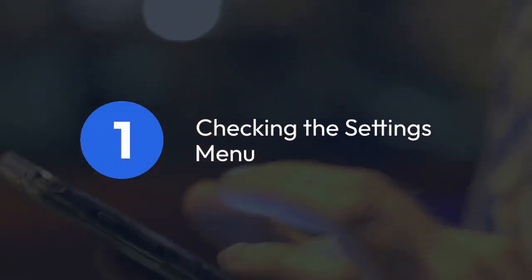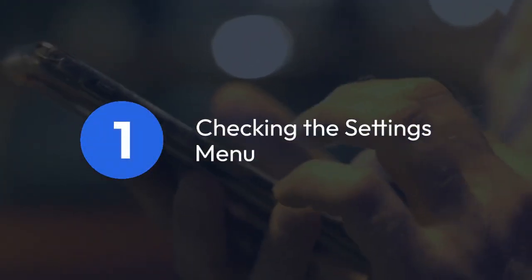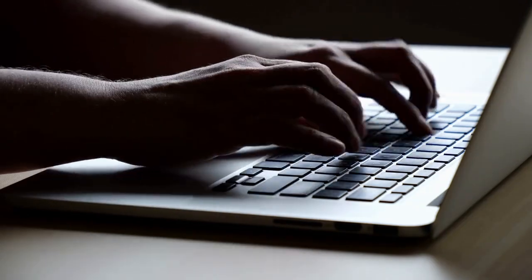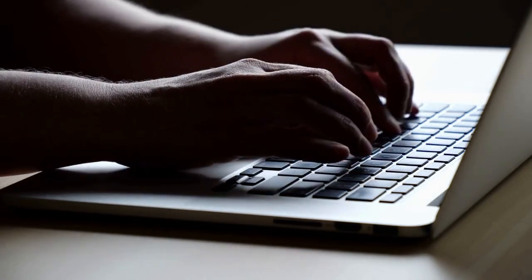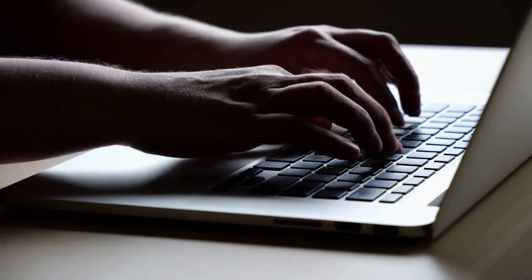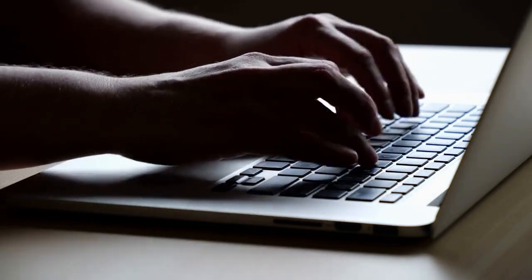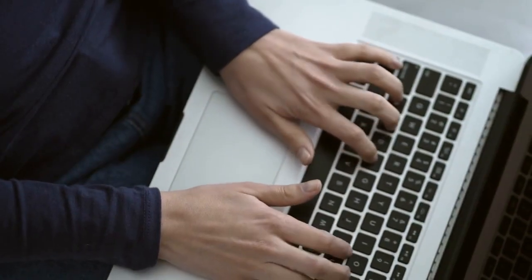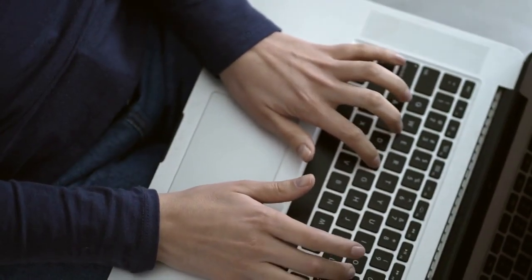One: checking the settings menu. The most straightforward method is to look for a language setting within Kuiwa's settings menu. This is usually accessed through a gear icon or three dots menu, often located in the upper right corner of the application.